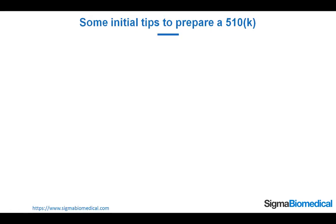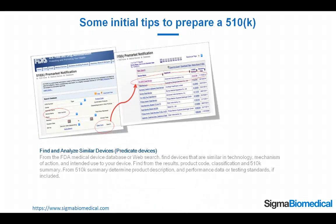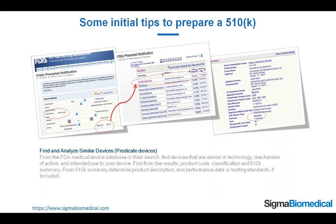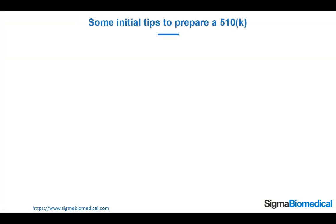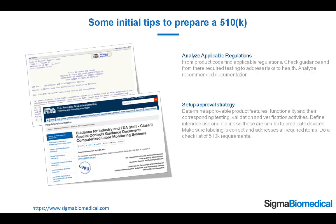Some initial tips to prepare a 510k. Find and analyze similar devices: from the FDA Medical Device Database or web search, find devices that are similar in technology, mechanism of action, and intended use to your device. Find the product code, classification, and 510k summary. From the 510k summary, determine product description and performance data or testing standards, if included. Analyze applicable regulations: from the product code, find applicable regulations, check guidance, and find required testing to address risks to health. Analyze the recommended documentation. Set up an approval strategy: determine approvable product features, functionality, and their corresponding testing, validation, and verification activities. Define intended use and claims so these are similar to predicate devices. Make sure the labeling is correct and addresses all required items. Do a checklist of 510k requirements.